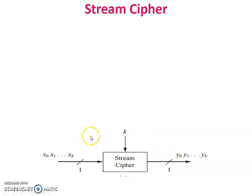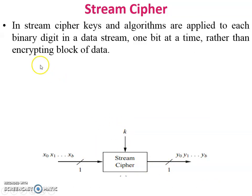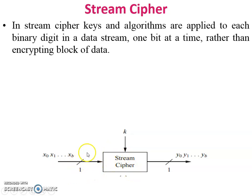This is the block diagram of stream cipher. In stream cipher, keys and algorithm are applied to each binary digit in a data stream. The input is plain text and key, and both are processed bit by bit — one bit at a time, rather than encrypting a block of data.